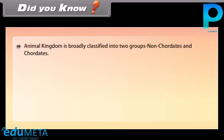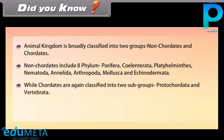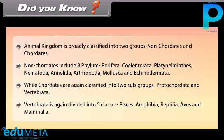Animal kingdom is broadly classified into two groups: non-chordates and chordates. Non-chordates include eight phyla: Porifera, Coelentrata, Platyhelminthes, Nematoda, Annelida, Arthropoda, Mollusca, and Echinodermata. Chordates are classified into two subgroups: Protochordata and Vertebrata. Vertebrata is again divided into five classes: Pisces, Amphibia, Reptilia, Aves, and Mammalia.